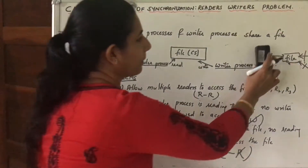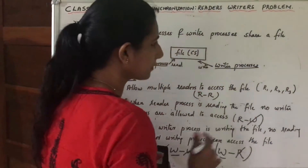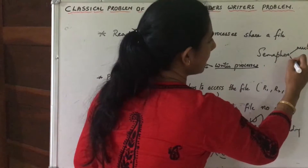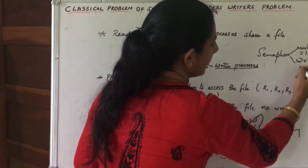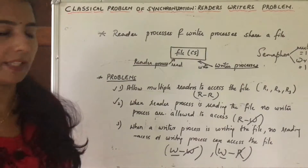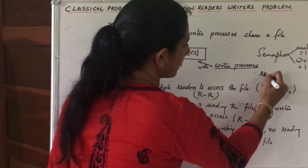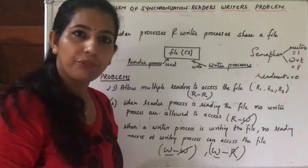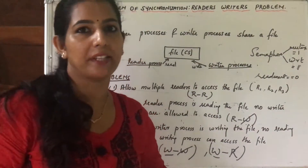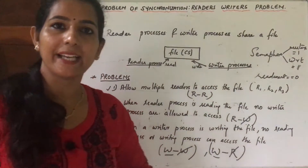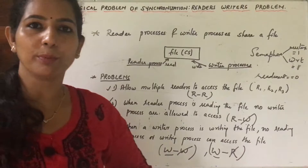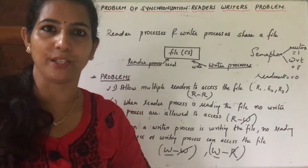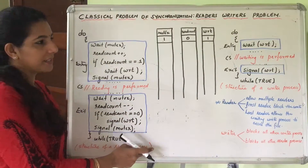To solve these problems we use two semaphores: one named 'mutex' and one named 'write', both initialized to one. We also declare an integer variable named 'read_count' initialized to zero. The value of read_count enables us to track the number of reading processes. Let's analyze the code of the reader process and writer process and see how these issues are solved using semaphore mutex, write, and read_count.